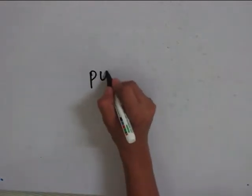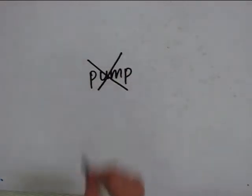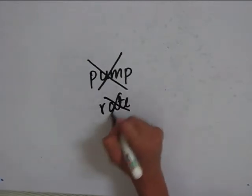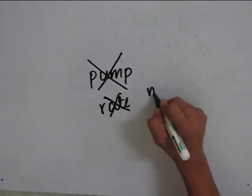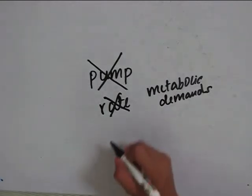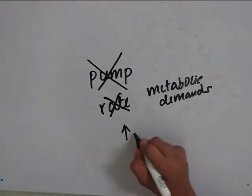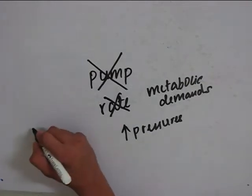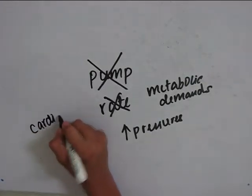So, what is congestive heart failure? Congestive heart failure is a situation which occurs when the heart is unable to pump blood at a rate which is not sufficient to meet the metabolic demands of a tissue, or it can do so at elevated pressures. It is a common end stage of many cardiac diseases.